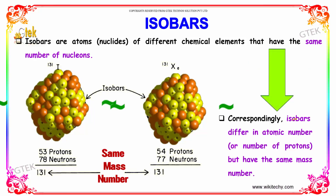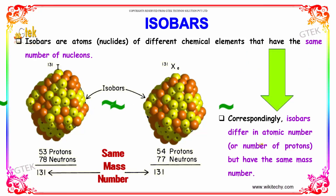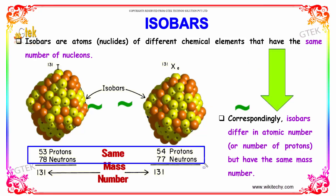Correspondingly, isobars differ in atomic number, or the number of protons. So the atomic number is different, but the mass number is the same. That's referred to as isobars.